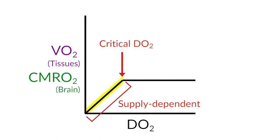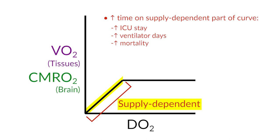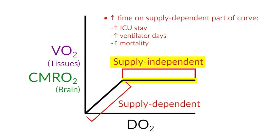The importance of this is that studies have shown the longer you remain on the supply-dependent portion of the curve, the longer your ICU stay, the longer the ventilator days, and the higher the mortality. It's important to note here that identifying patients on the supply-dependent portion of the curve can be difficult, and clinical exam alone is going to be inadequate to identify who's here and who needs to have their delivery of oxygen augmented to move them to the supply-independent portion of the curve.